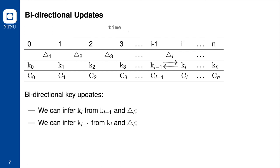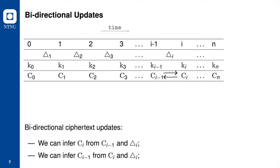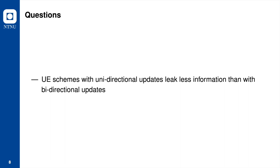If an updatable encryption scheme has bidirectional key updates, the update token can both upgrade and downgrade keys. If an updatable encryption scheme has bidirectional ciphertext updates, the update token can be used to move ciphertext from the old key to the new key and vice versa. Intuitively, UE schemes with unidirectional updates are desirable, as they leak less ciphertext and key information to an adversary compared to schemes with bidirectional updates.